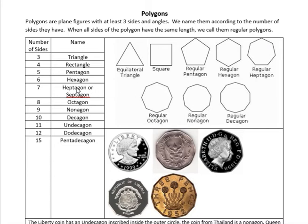A heptagon has seven sides. Sometimes you see a heptagon called a septagon, and that depends on whether it originated with the Greeks or Latin — there are some slight differences, but they have the same meaning. An octagon has eight sides. You may remember octagon because octopus has eight legs, and also this is the shape of a stop sign.